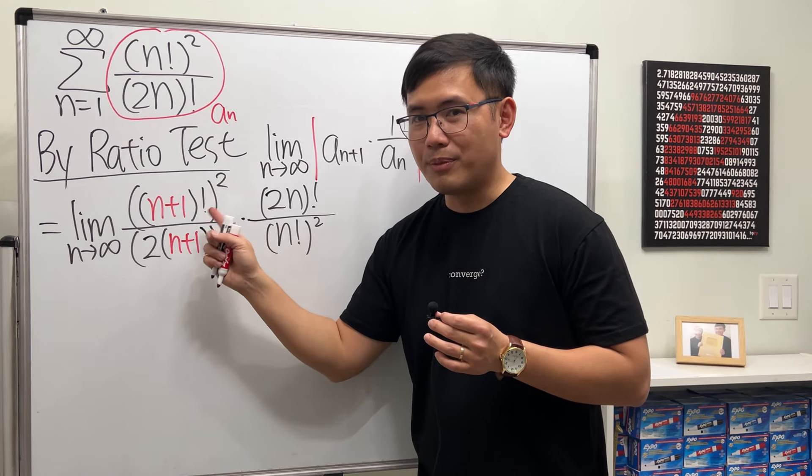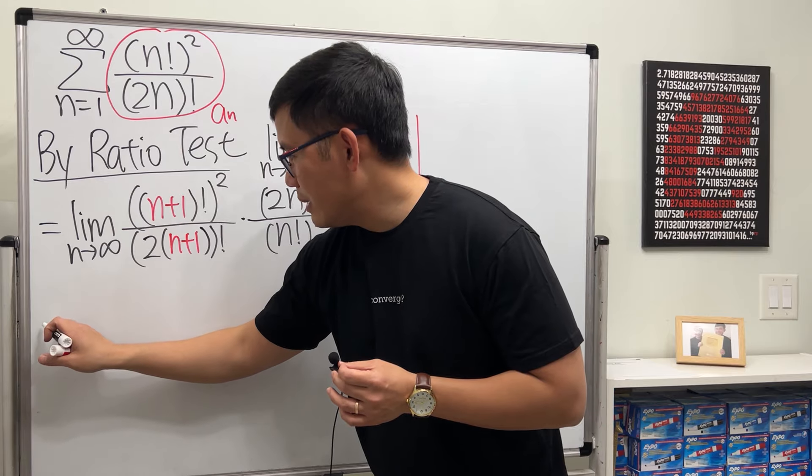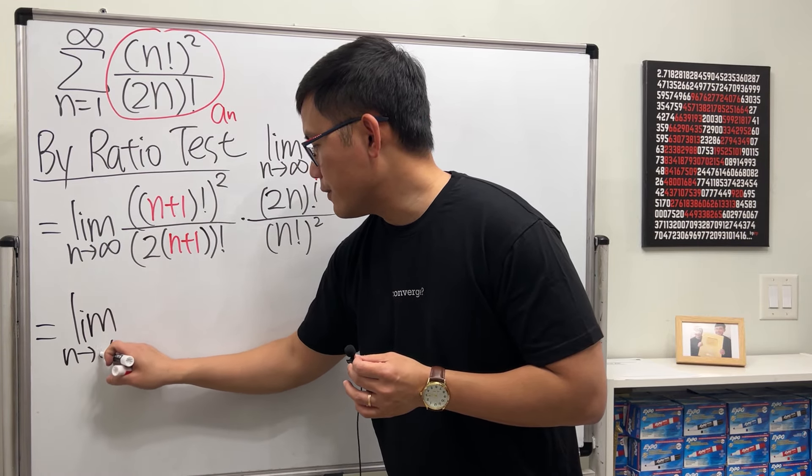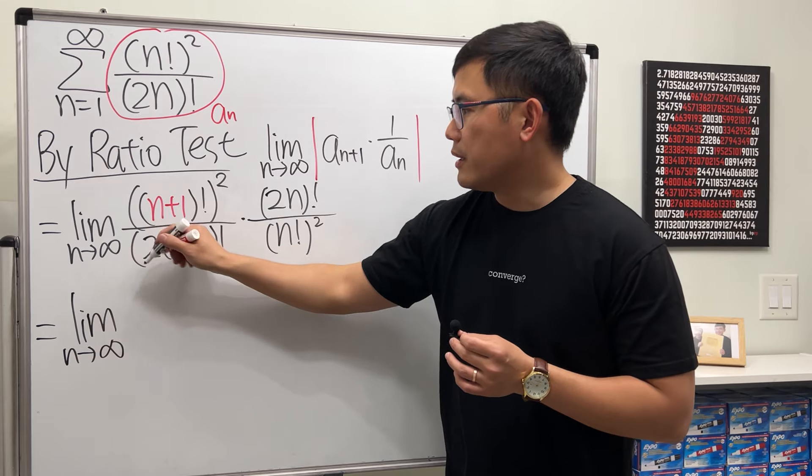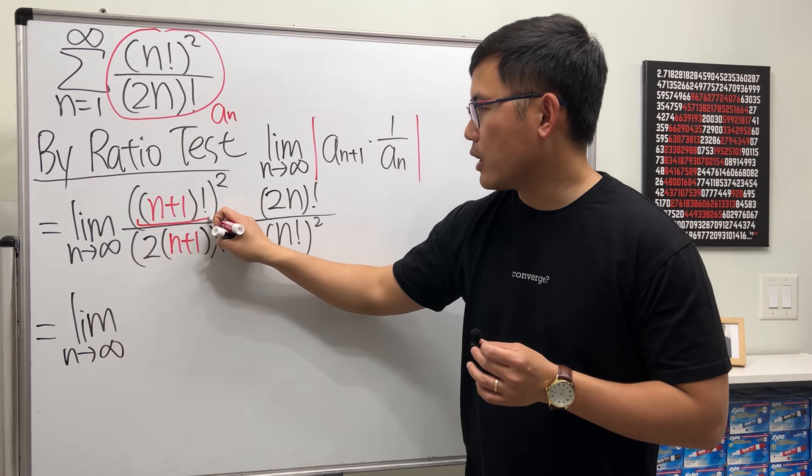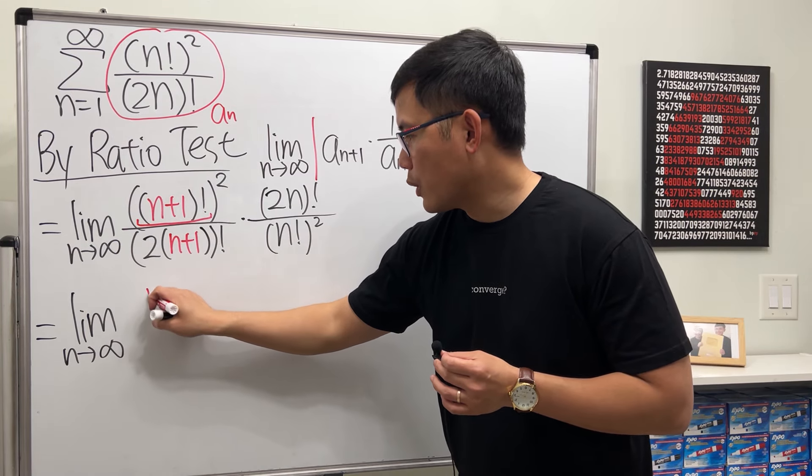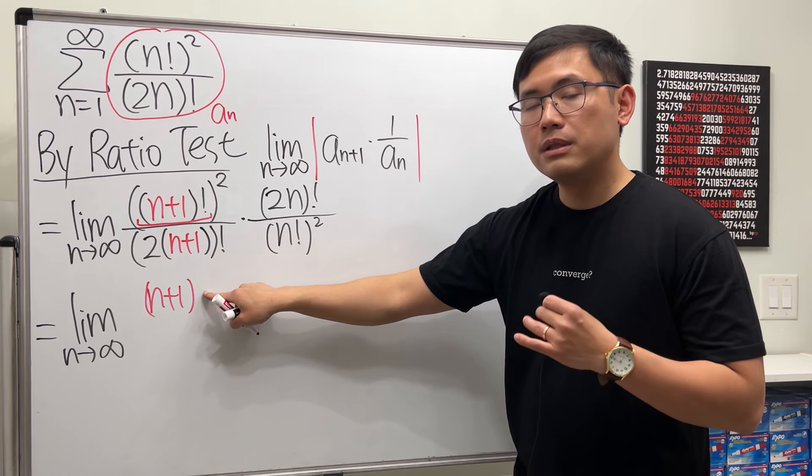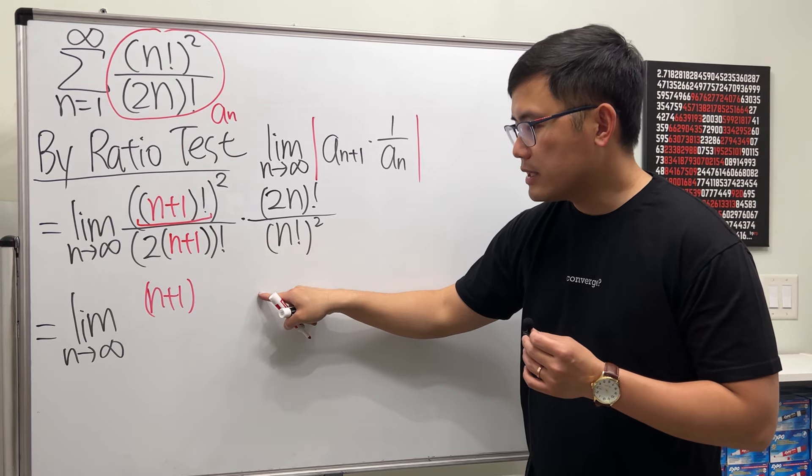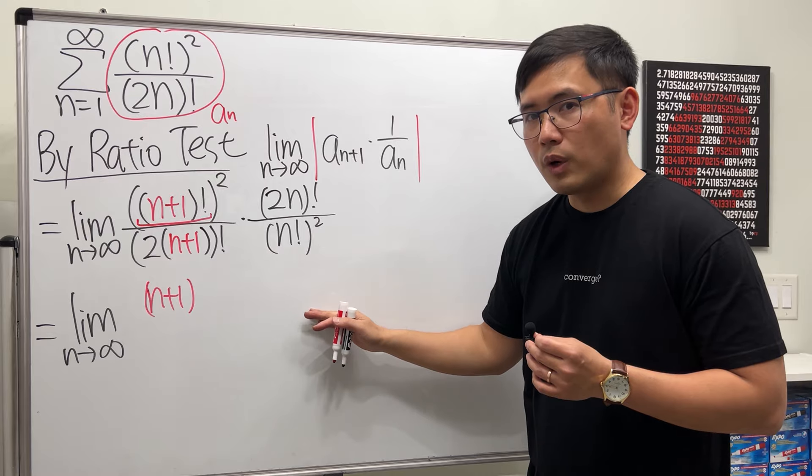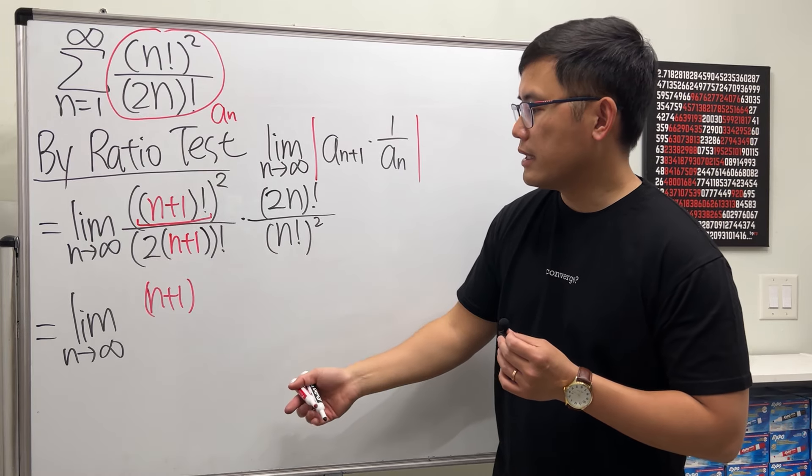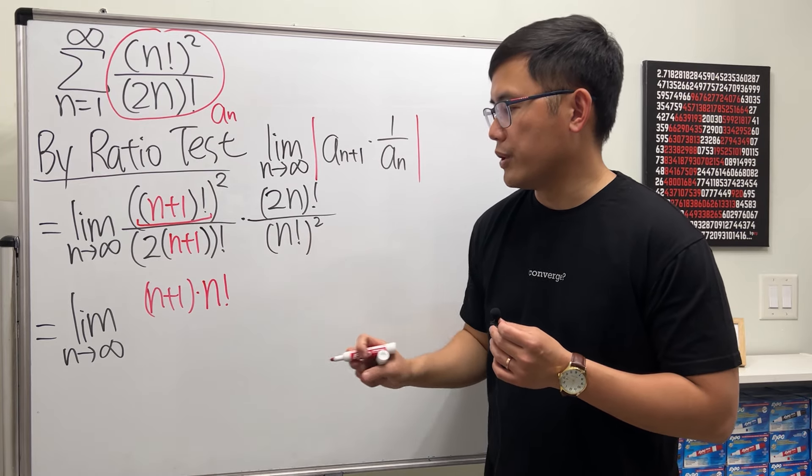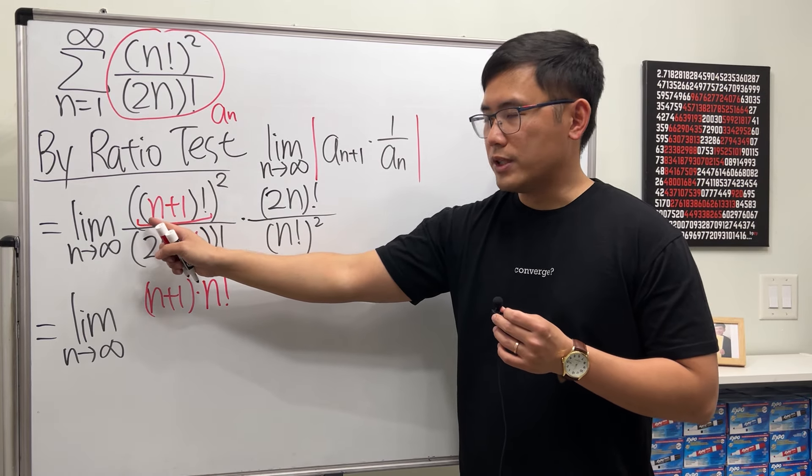We're going to break this apart carefully, so let me write this down again. We are looking at the limit as n goes to infinity. Here, (n+1) factorial means we start with n+1 and then times the next number which is n, and then times the next one which is n-1, and so on. In other words, we can just put this as (n+1) times n factorial.